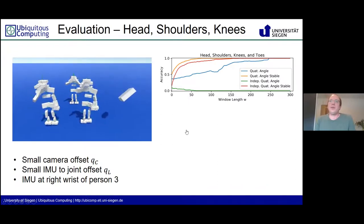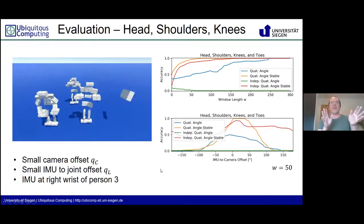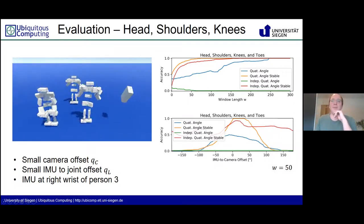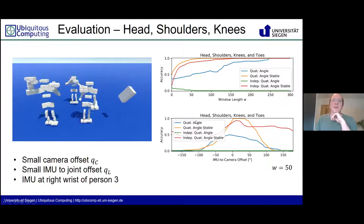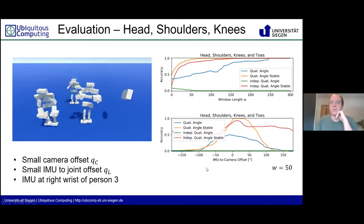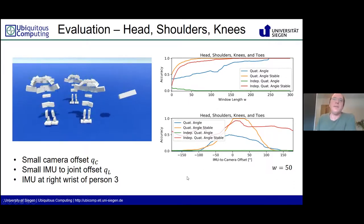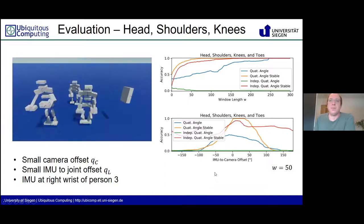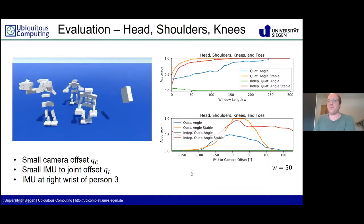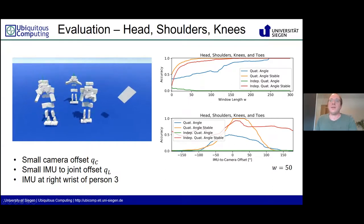Now let's rotate the IMU-to-camera offset — imagine a virtual camera rotating around the users from minus 100 to plus 100 degrees. The quaternion angle and quaternion angle stable, being dependent on the IMU-to-camera offset, drop close to zero at high offsets and peak near zero degrees. The independent quaternion angle stable remains at high accuracy over the whole range, though due to the swing-twist decomposition it gets slightly distorted, since that decomposition also depends on the IMU-to-camera offset. This is evaluated at W equals 50.